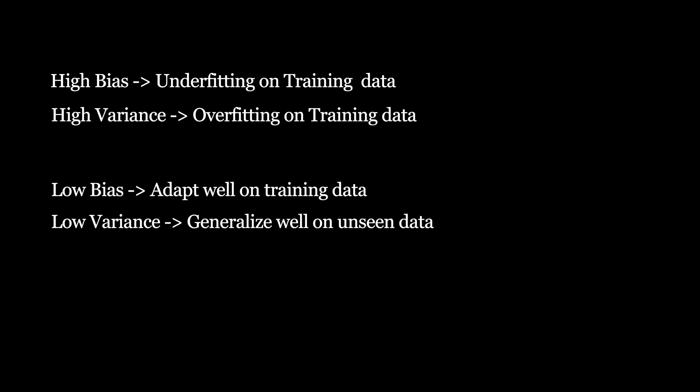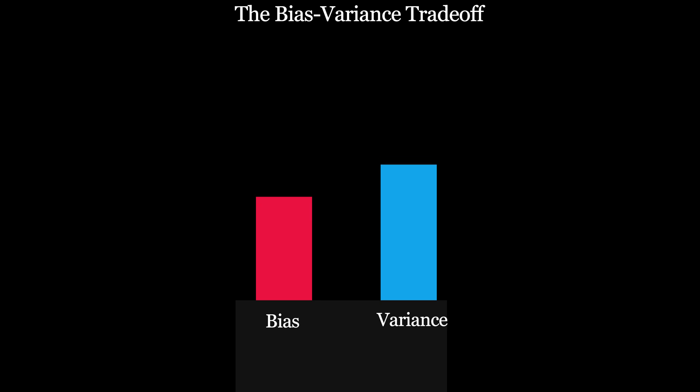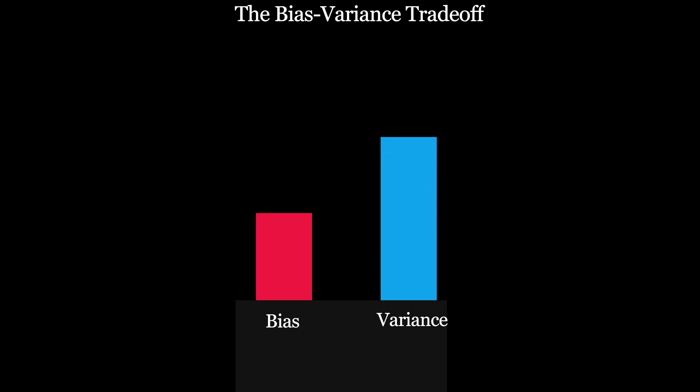This relationship between bias and variance brings us to a famous tradeoff called the bias-variance tradeoff, where if you try to decrease one, the other will start increasing. As we already saw, a model with low bias and low variance performs well.